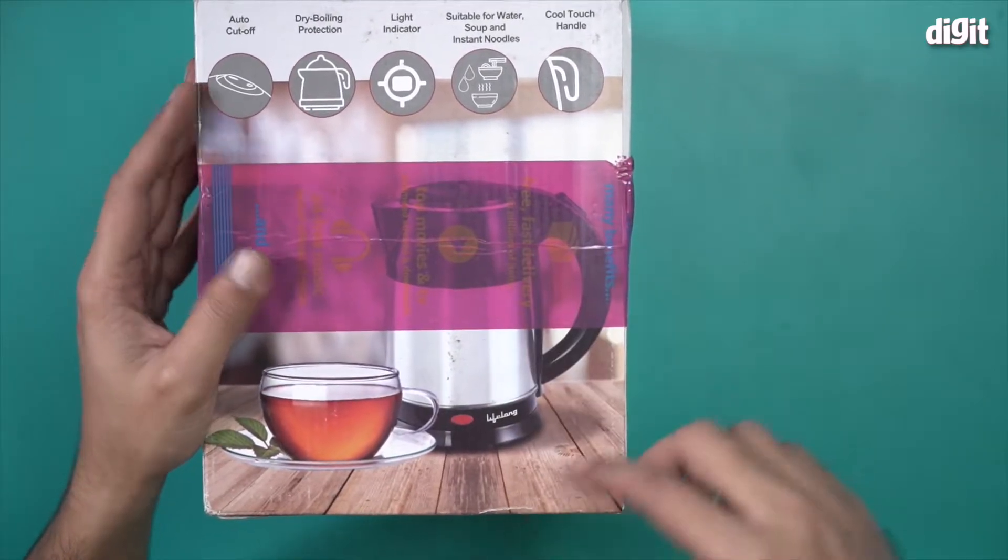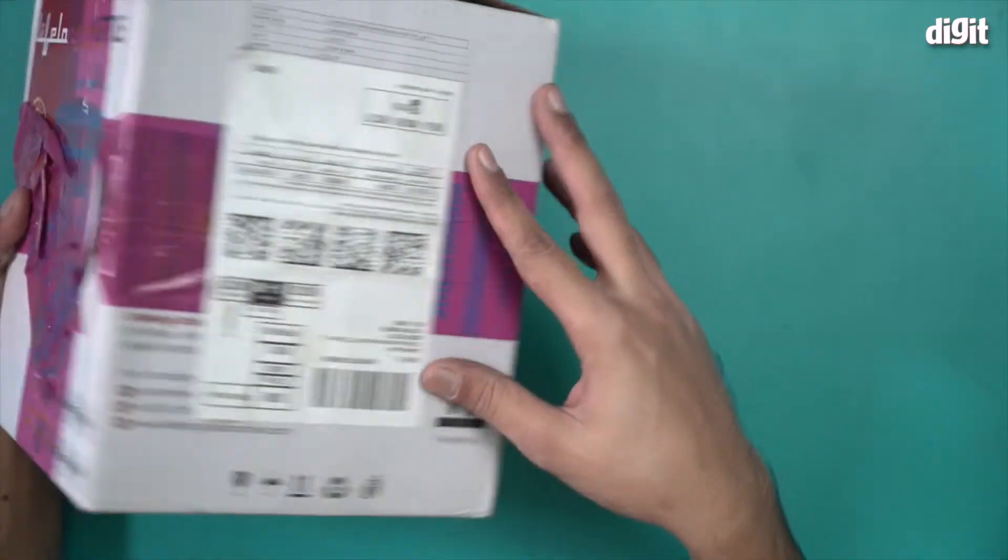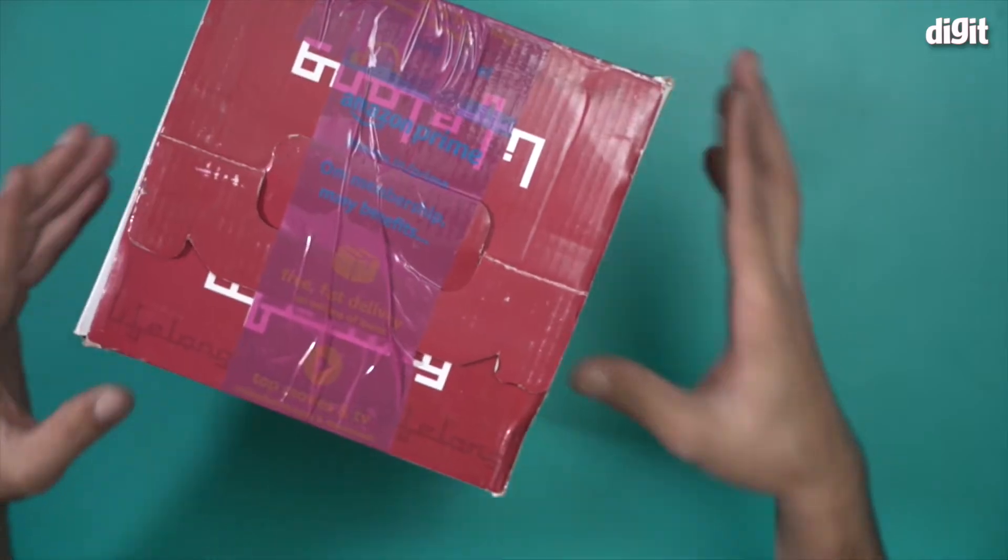The kettle is shown here on the box. It comes with a stainless steel body, but there's a wrapper all over the box which is obscuring a lot of information. I will open this box and show you what's inside.